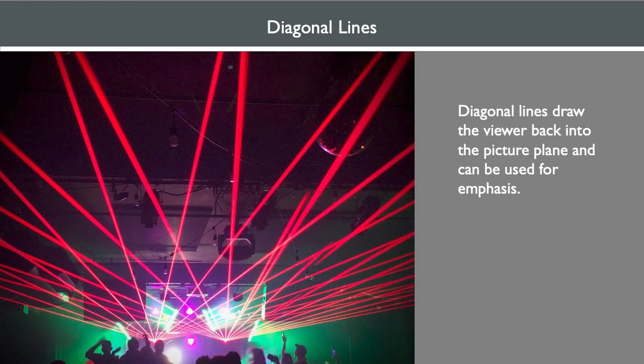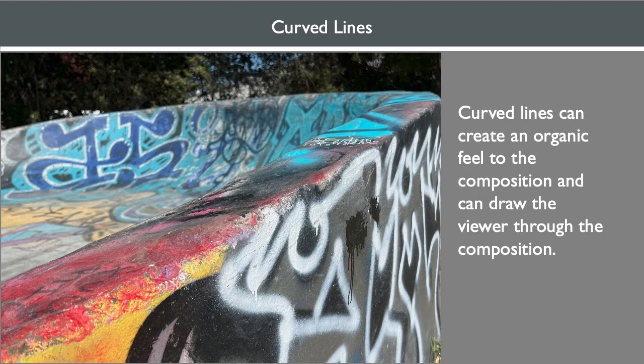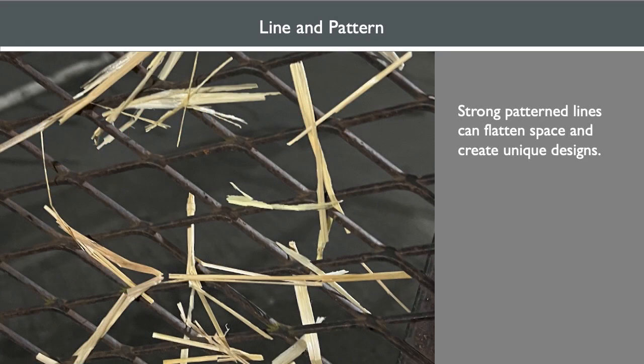Diagonal lines draw the viewer around the picture plane and can be used for emphasis, and they also add a lot of energy to your photographs. Curved lines can create an organic feel and draw the viewer through the composition. Curved lines can also create an S-curve that is visually appealing as it adds repetition and rhythm. Line can also influence perspective — it can flatten or increase depth in a composition. Strong pattern lines can flatten space and create unique designs.